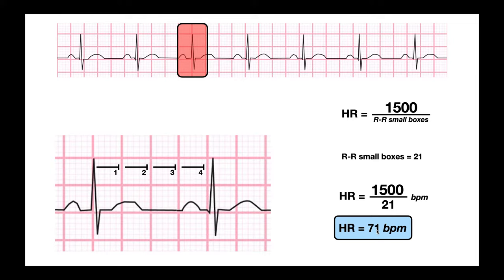To summarize, you find a peak that is right on one of those solid lines and you count the number of small boxes between it and the peak adjacent to it. Usually we go forward. You get the number of small boxes and then you take 1500, always that number, and divide by the number of small boxes and that is your heart rate in beats per minute.